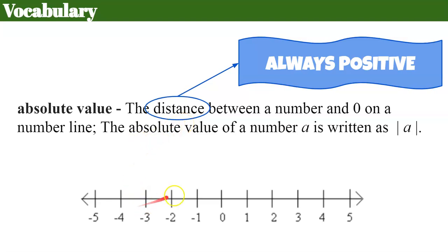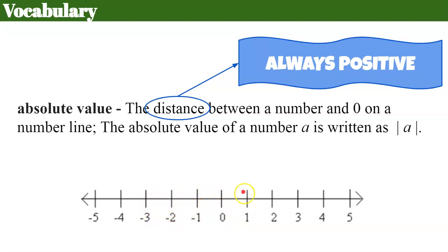We talk about distance on the number line in the same way. You may go in a negative direction but you're moving a distance. So the distance between negative 3 and 1 is 4 — not negative 4, always positive 4. Whether you go from negative 3 to 1 or from 1 to negative 3, it's still 4 units away.